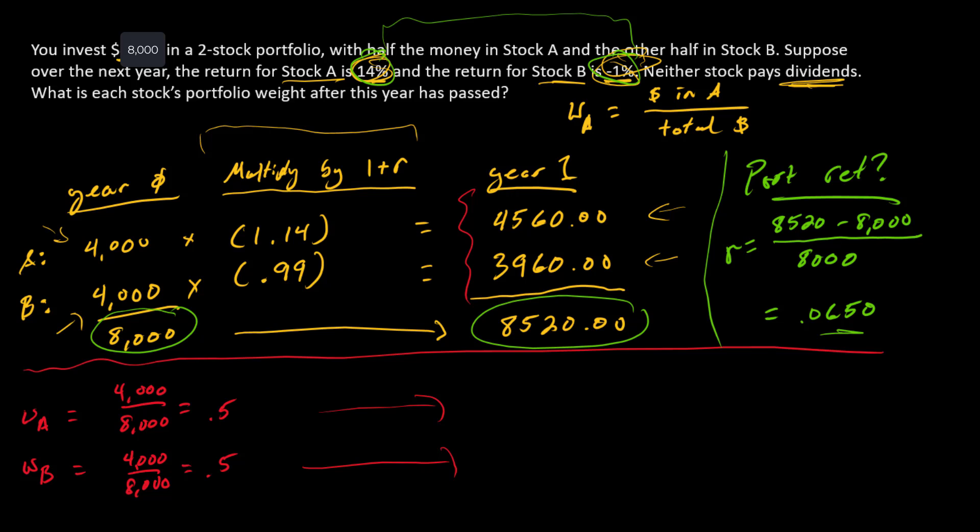Since A went up in value and B went down in value, nothing else changes. A is going to increase in weight and B is going to decrease in weight—takes up more of the basket, if you will.